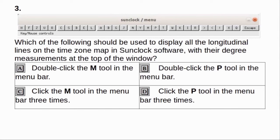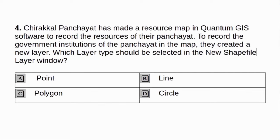Which of the following should be used to display all the longitudinal lines on the time zone map in SunClock software, with their degree measurement at the top of the window? A. Double-click the M tool in the menu bar. B. Double-click the P tool in the menu bar. C. Click the M tool in the menu bar three times. D. Click the P tool in the menu bar three times. Answer: B.